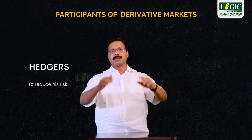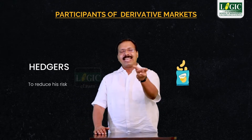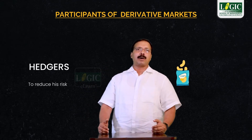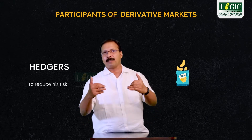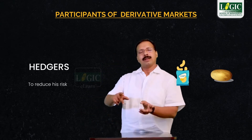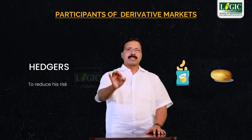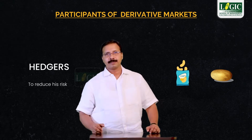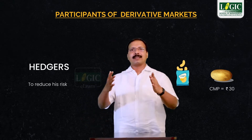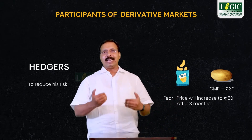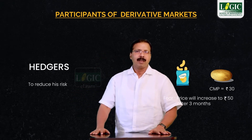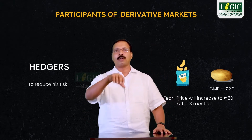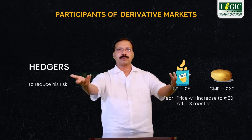Suppose Pepsi company — you know Lays potato chips is their product. This Pepsi company is concerned about the raw material price. What is the raw material of potato chips? It is potato. After three months, the current market price of the raw material, that is potato, is 30 per kg. But they fear that the price may increase to 50 after three months. Throughout the year, they normally maintain the same selling price for their output, maybe 5 rupees or 10 rupees, whatever it is.